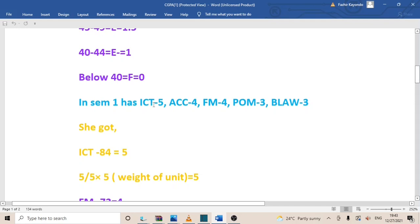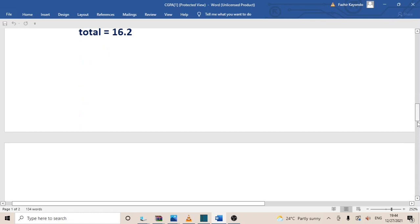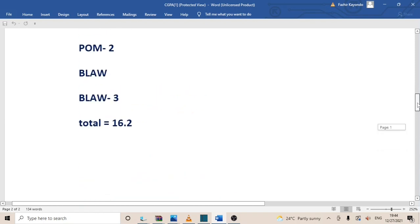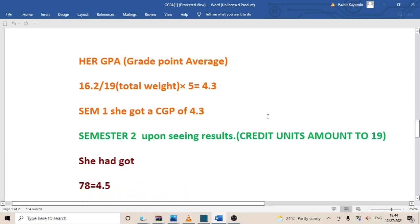Assuming that semester one, when they add the ICT, Accounting, FM, POM, and BLAW, she got 16.5, meaning that her GPA - remember it's not accumulating because it's semester one - so her GPA, which is her grade point average, will be 16.5 divided by 19 times 5. Now where does the 19 come from? The 19 comes from the total of all these course units: 3 plus 4 plus 4 plus 5 you get 19. Meaning out of the 19 she got 16.5 as a weight, and then times 5, which is going to give me a 4.3. So semester one she got a GPA of 4.3.